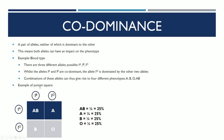An example Punnett square to demonstrate this: the individual to the left is blood type A, and the individual up top is blood type B. If these two were to cross and mate, then the chances of the offspring having certain blood types are shown here — in this specific example, it's 25% all-round.